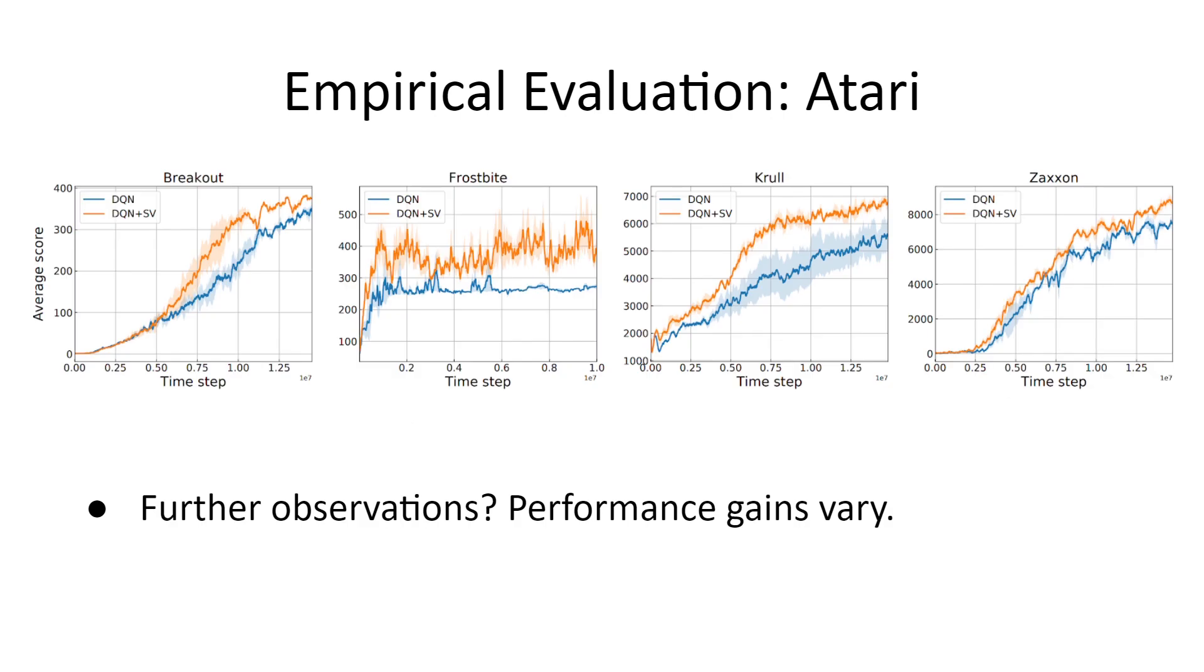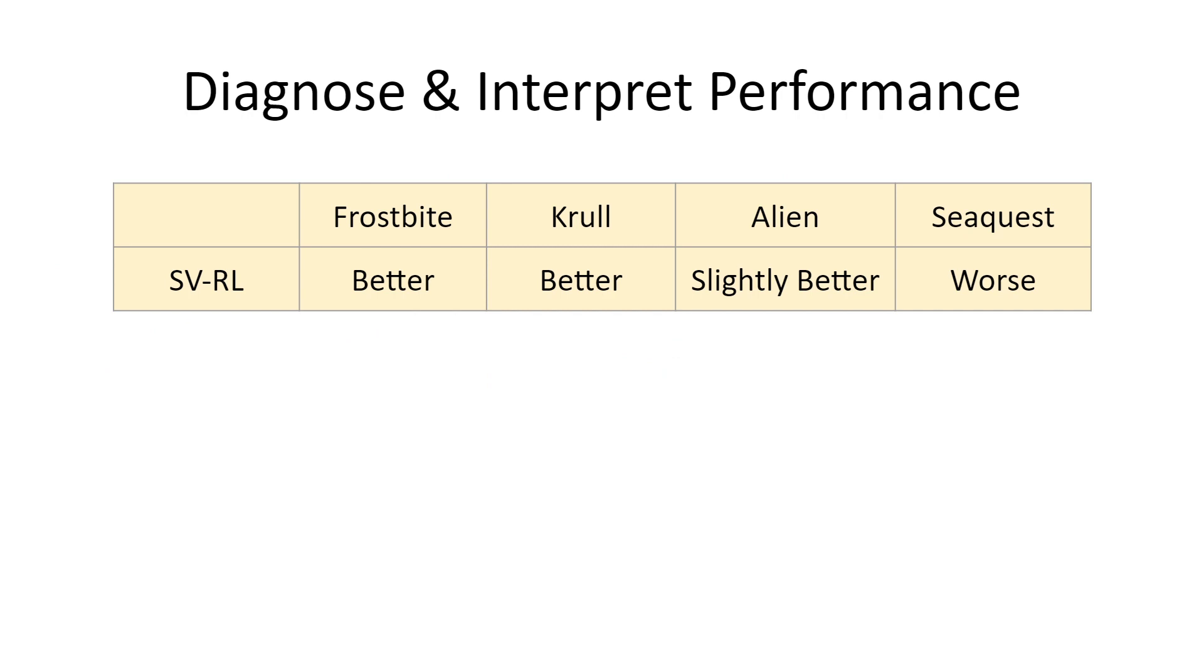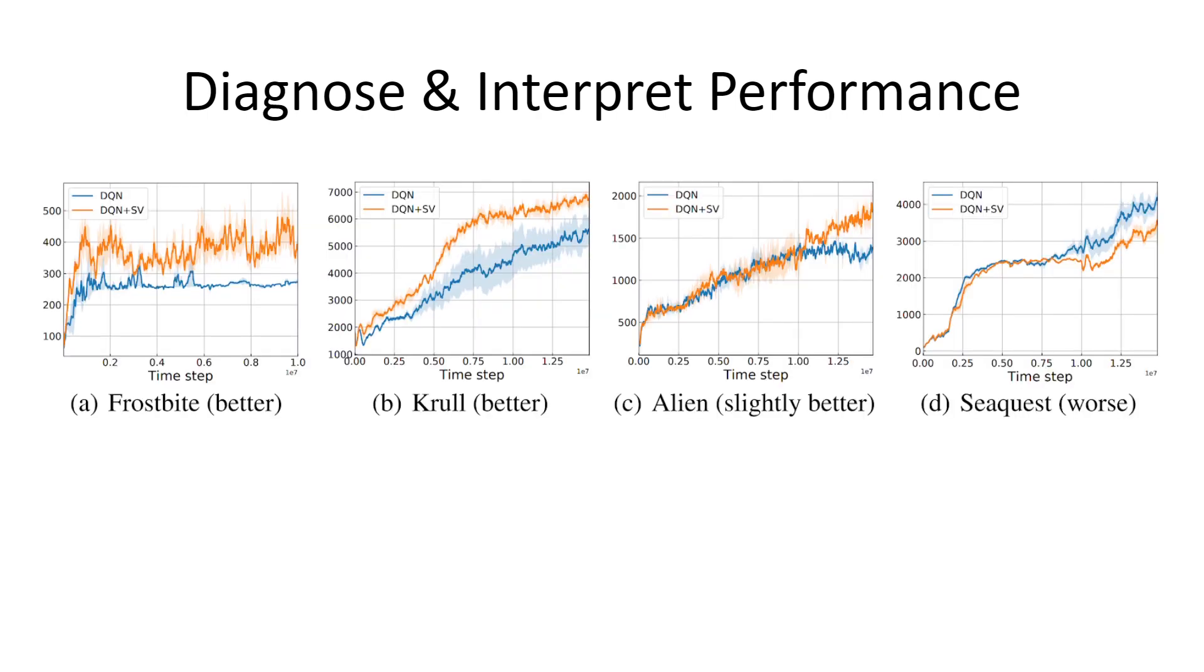Interestingly, however, the performance gains are different across games. Naturally, can we interpret them through a finer structured viewpoint? To this end, we select four games for further diagnosis and interpretation. SVRL performs better on two of them, slightly better for one game, and worse for the remaining one, Seaquest. Can we consistently interpret this increase or decrease in performance? Very naturally, our method is designed to exploit the low rank structures. Obviously, however, not all tasks would have such structures. Therefore, a promising hypothesis is to attribute the differences in performance to the strengths of their structure properties.